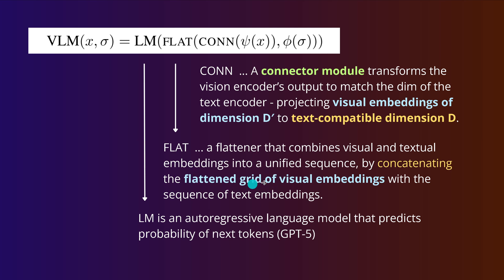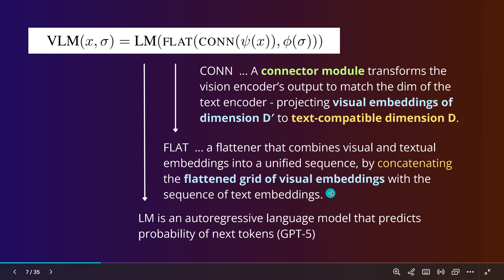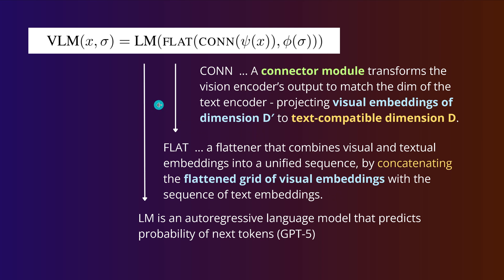By concatenating the flattened grid of visual embeddings with the sequence of text embeddings into a huge linear sequence, we feed it into our pattern recognition machine — the language model. We have an autoregressive language model that predicts the probability of the next token, handling both text tokens and pseudo-tokens: synthetic tokens generated in a particular mathematical space given the grid dimension of the images. This is not really coherent — there is a lot of mathematical transformation happening, just going from 1,000 to 4,000 dimensional spaces.